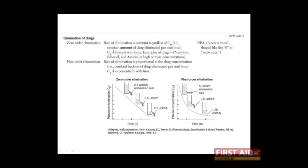Let's talk about the elimination characteristics of certain drugs. Drugs typically show one of two kinds of elimination. The first is known as zero-order elimination, and the second is known as first-order elimination. Most drugs actually show first-order elimination, but it's important to know about zero-order as well.